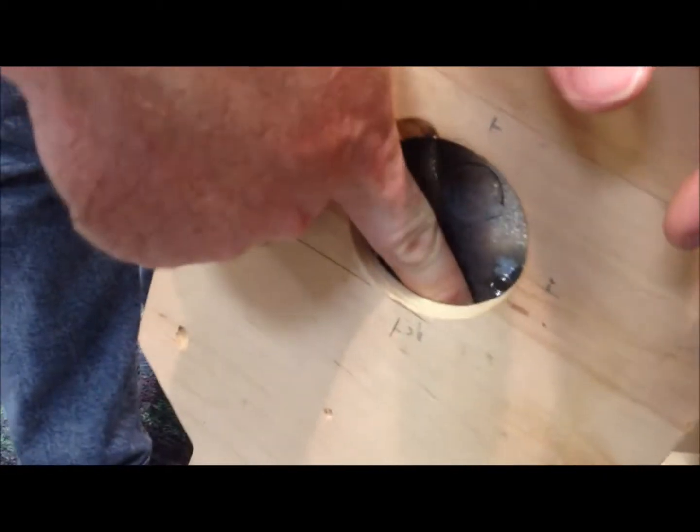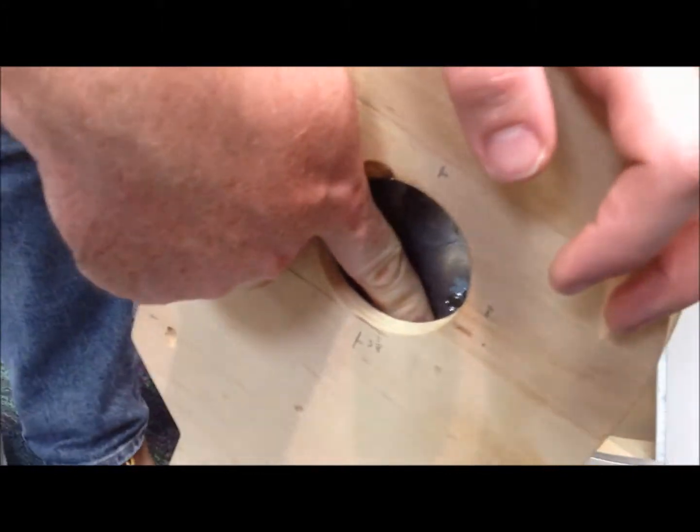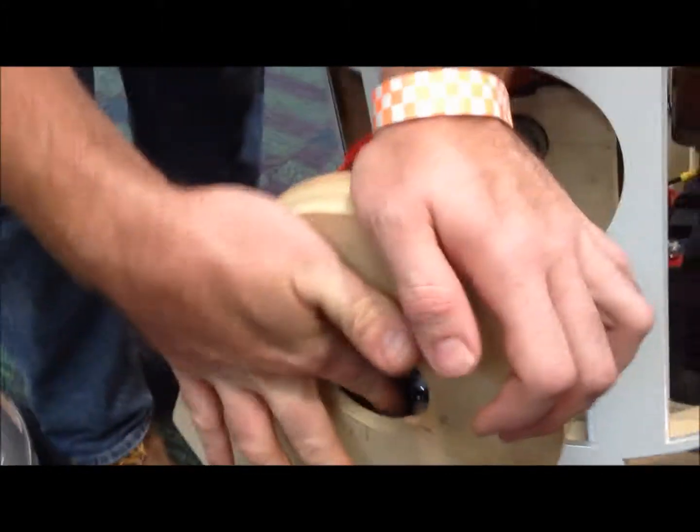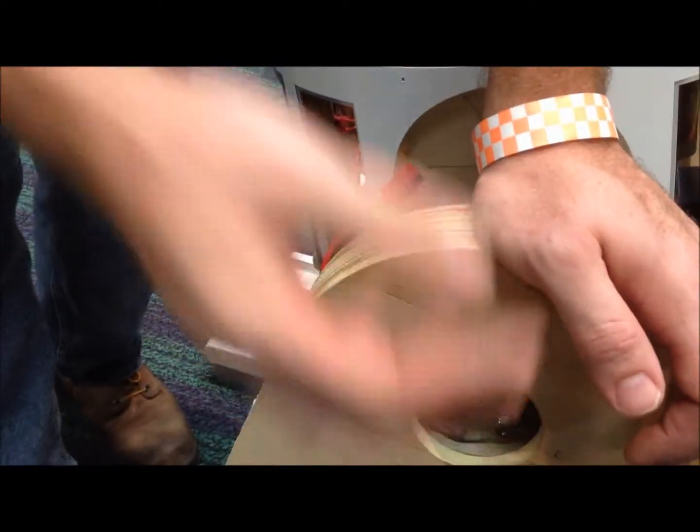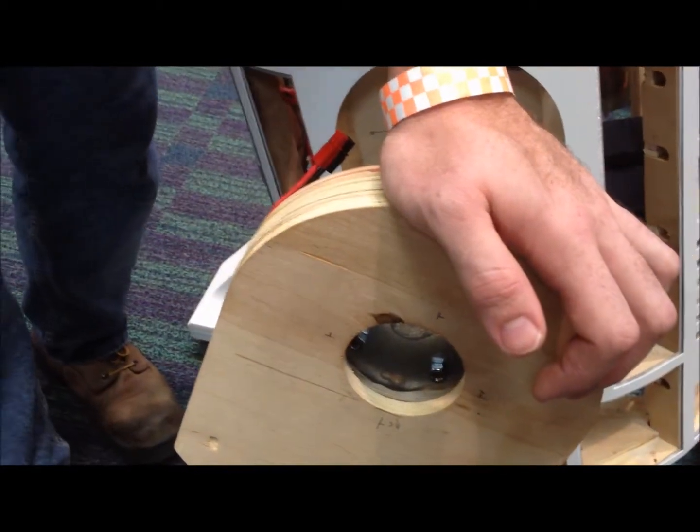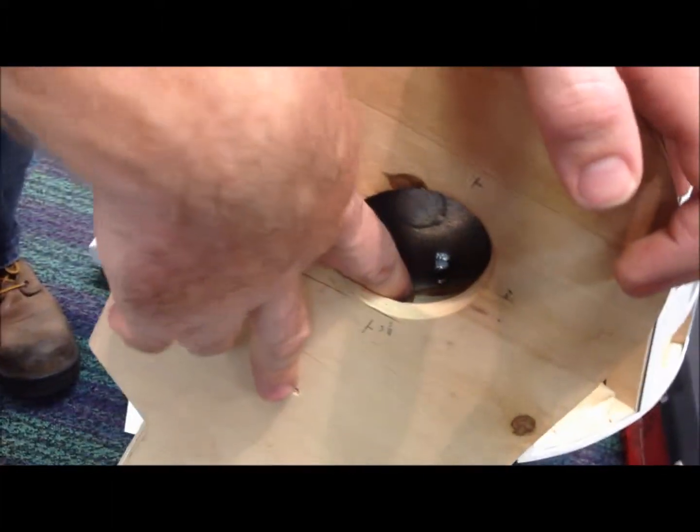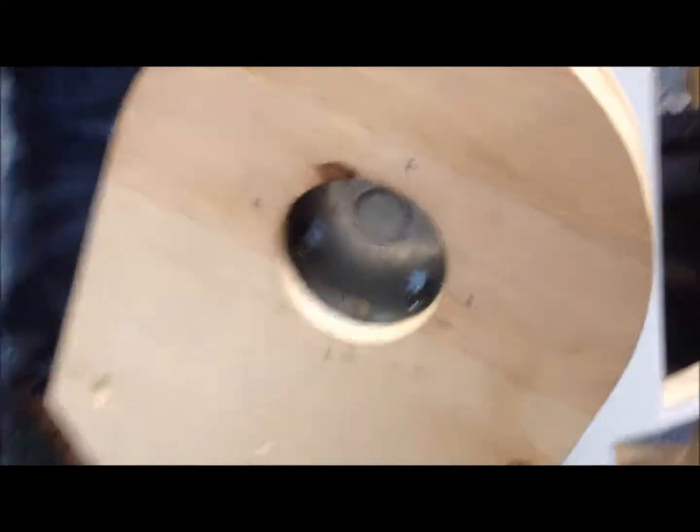I got the, I forget what they're called, but they're these little threaded anchors that get the right size and they have these spikes that go into the wood. T-nuts. T-nuts, yes. And so I just used those and got them going all the way around.